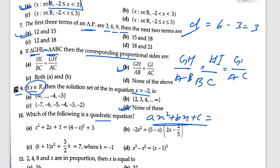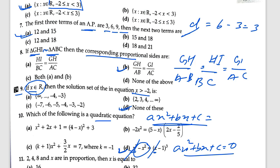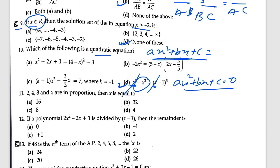The correct answer for question 10 is D because it has x cubed which gets reduced, and the rest is in the form AX squared plus BX plus C equals 0. Question 11: 2, 4, and 8 and x are in proportion, then x is equal to — using 2 over 4 equals 8 over x, the value would be 16.